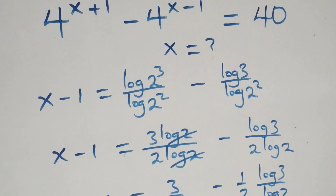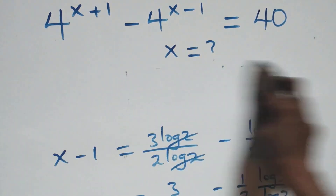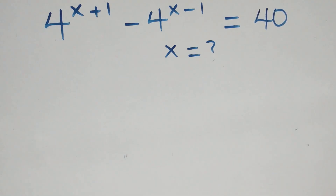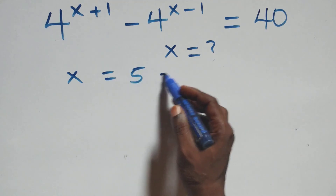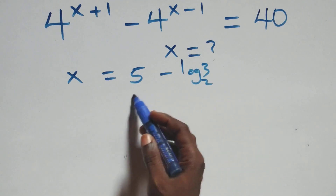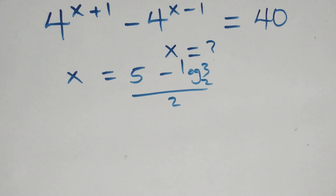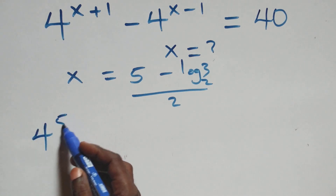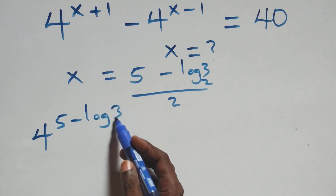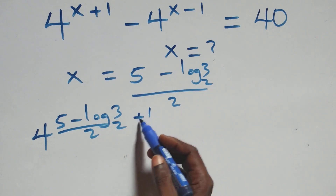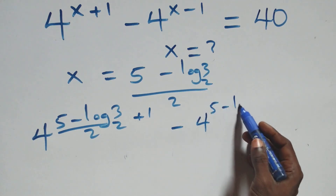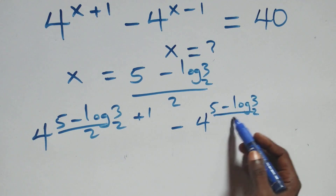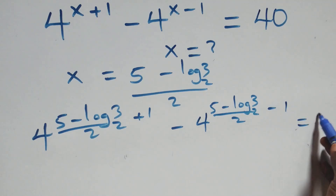We verify by substituting x equals (5 minus log 3 base 2) all over 2 back into the original equation. This gives 4 raised to the power (5 minus log 3 base 2) over 2 plus 1, minus 4 raised to the power (5 minus log 3 base 2) over 2 minus 1, which should equal 40.